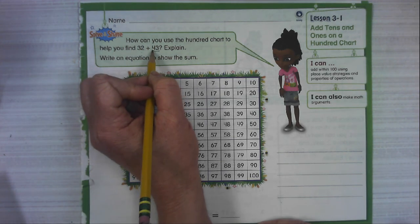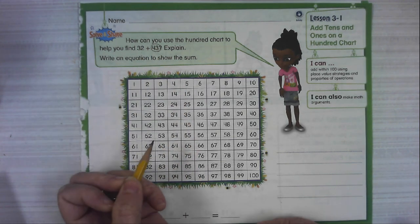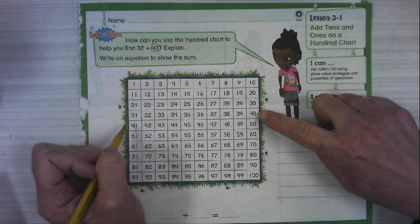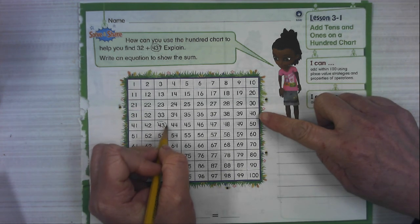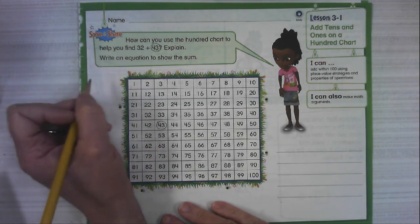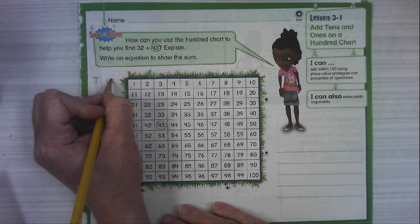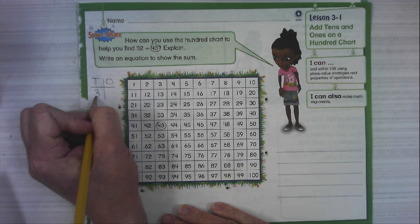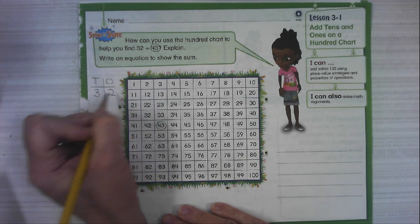43 is greater. So if we start there, we don't have as far to go. So I'm going to find 43 on my hundreds chart. Here's our 40s and start with 43. The next thing I'm going to do is I'm going to make a place value chart. We just have tens and ones, don't have to do our hundreds place.